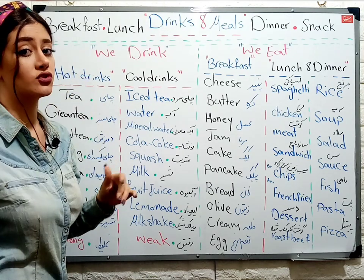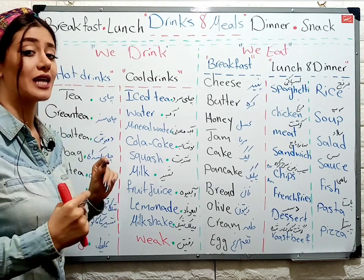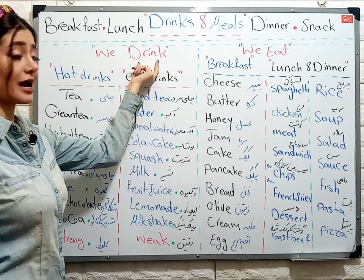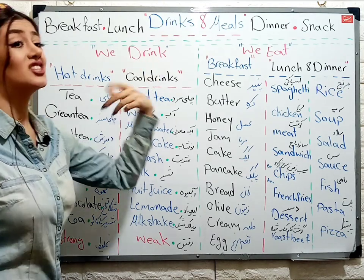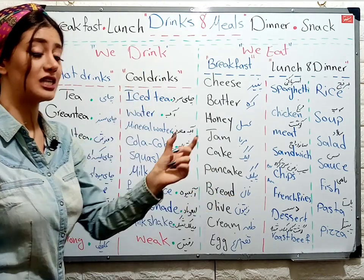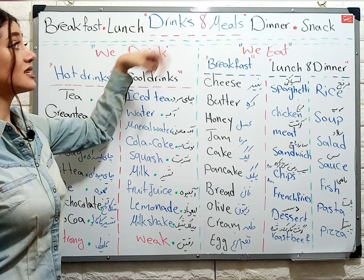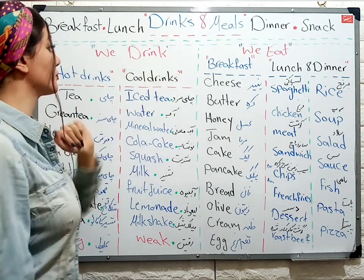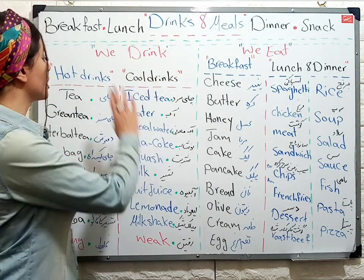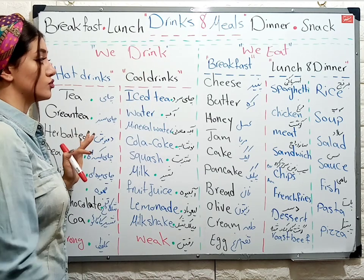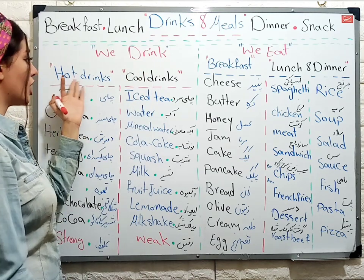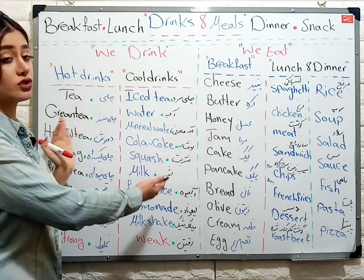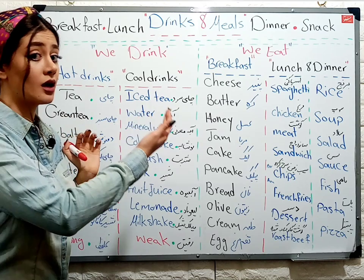We drink drinks. ما نوشیدنی‌ها رو می‌نوشیم. The verb used for drinks is 'drink' — it's a verb. 'Drinks' as a noun means نوشیدنی‌ها — it has an S. I have two parts of drinks for you: hot drinks and cool drinks. نوشیدنی‌های گرم و نوشیدنی‌های سرد.